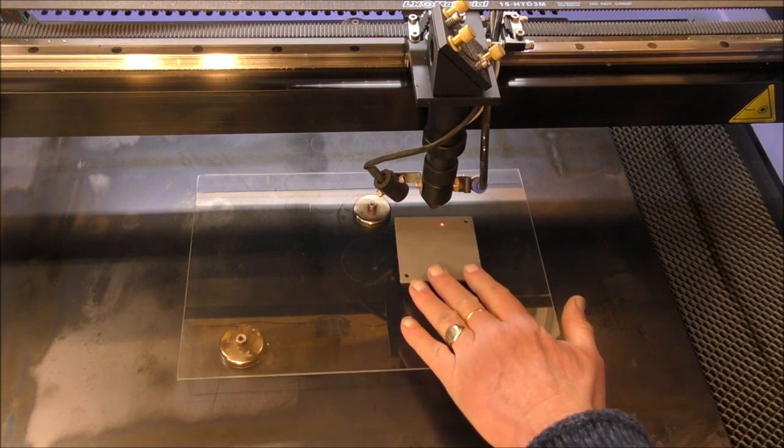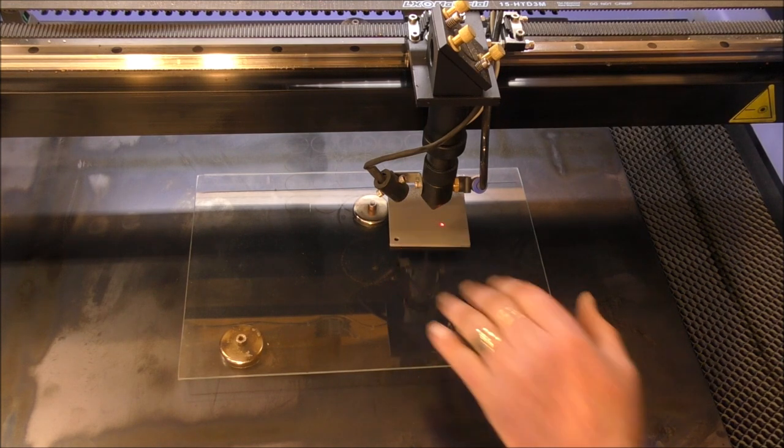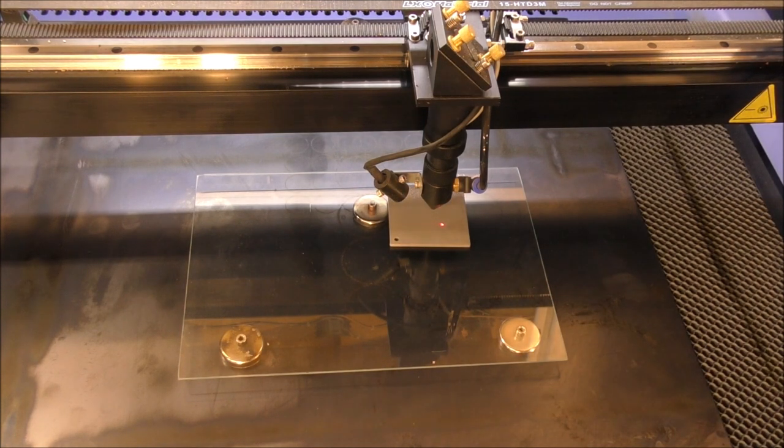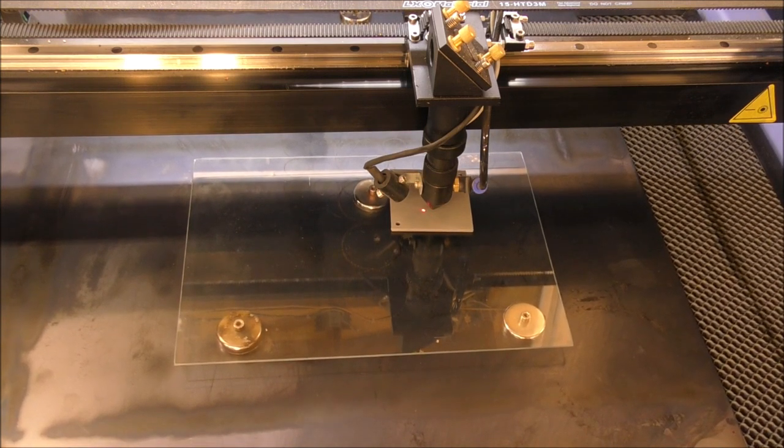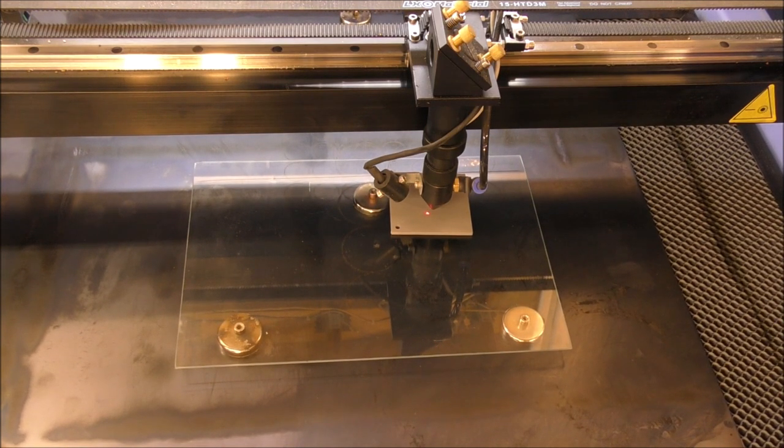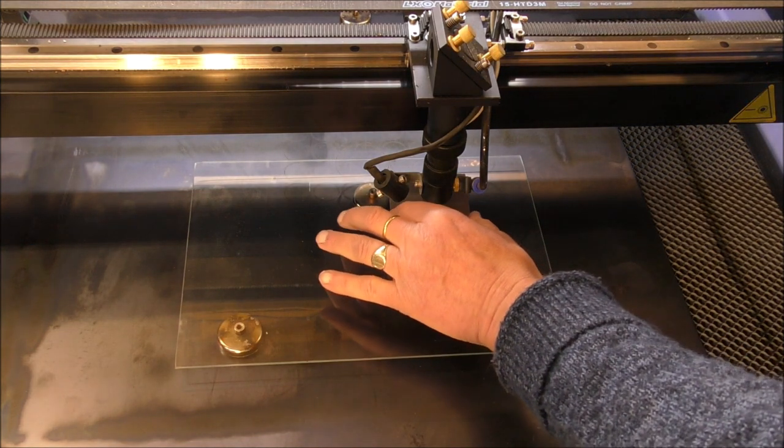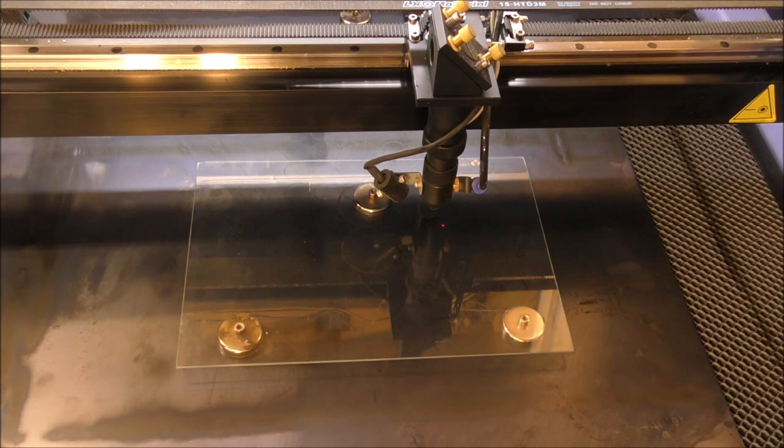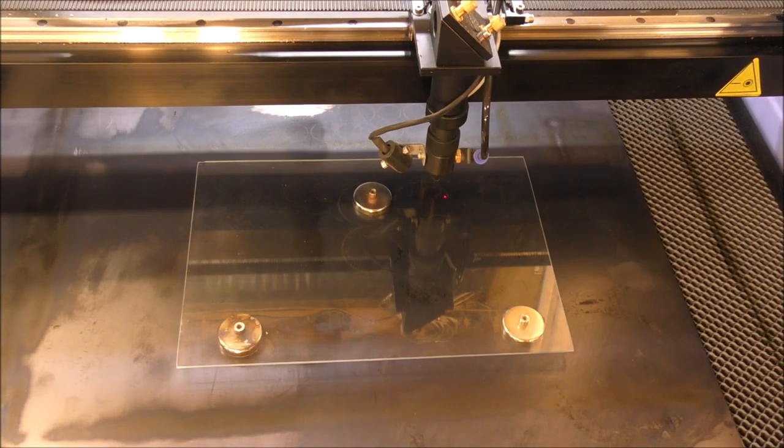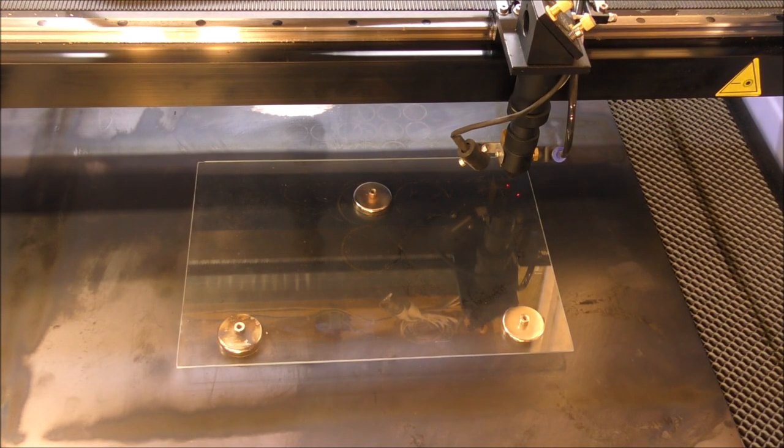So the first thing we do is we set the height of the nozzle automatically in this case, and it's actually 9.5 millimeters - the gap is 9.5 millimeters underneath here.